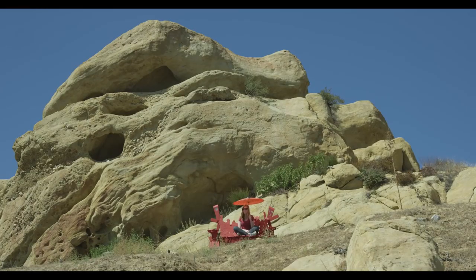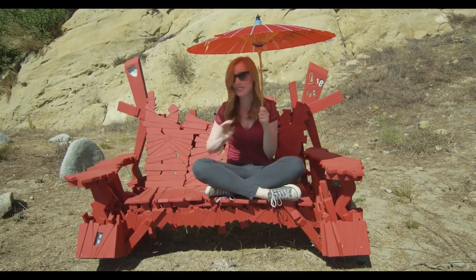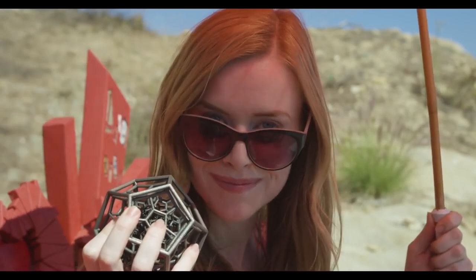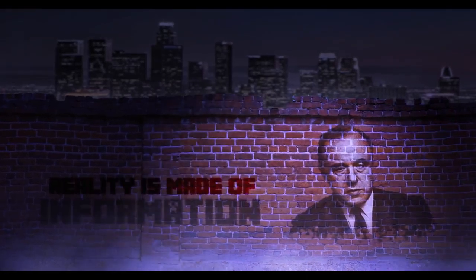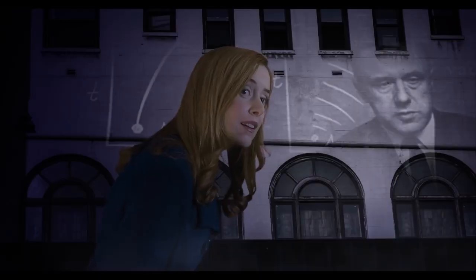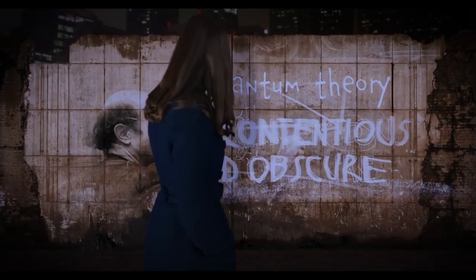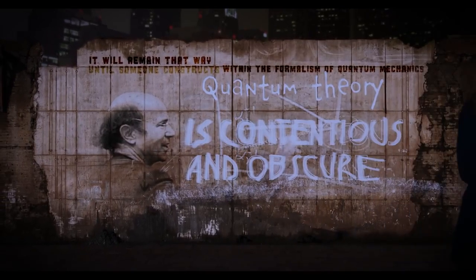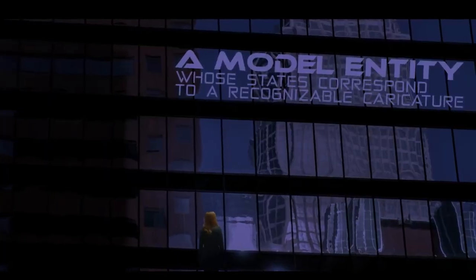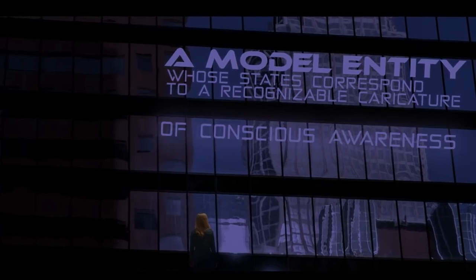So how does free will work? One of the most surprising discoveries of quantum physics is that reality only exists when it is observed — particles do not exist until they are observed. Famous physicist John Wheeler, the guy who came up with the term 'black hole,' says that reality is made of information which is created by observation. The observation must be made, he says, by something conscious. And Nobel Prize winner Frank Wilczek said that quantum theory will remain contentious until someone constructs within the formalism of quantum mechanics an observer — a model entity whose states correspond to a recognizable caricature of conscious awareness.